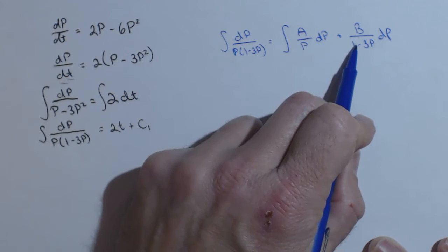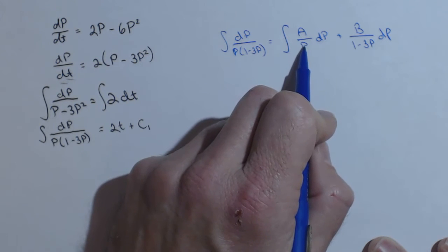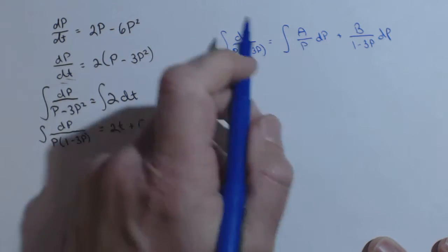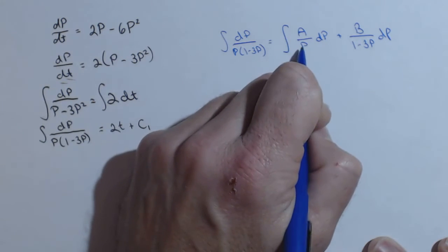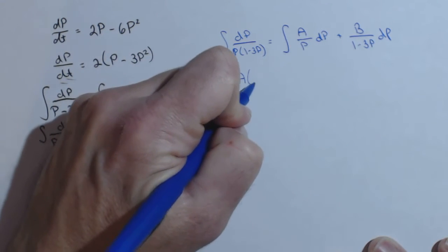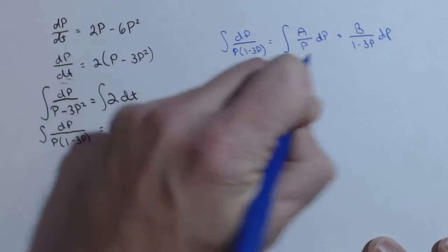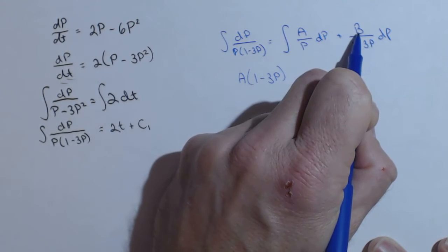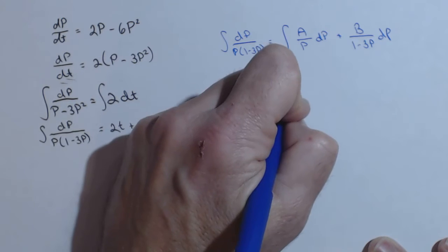So this thing is going to have the form of a over p dp plus b over 1 minus 3p dp. So we need a and b and then we'll be able to go on with this problem. The way I like to do this is my common denominator is p times 1 minus 3p. To have the common denominator, this one would need to be multiplied by 1 minus 3p, so a times 1 minus 3p. Similarly, b would have to be multiplied by p.